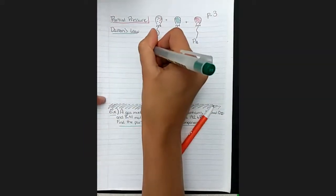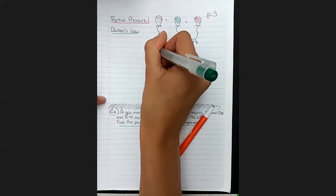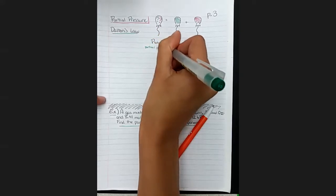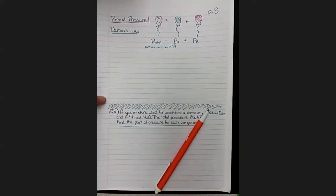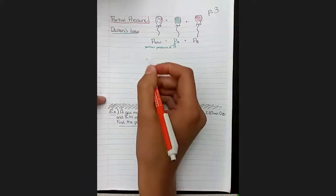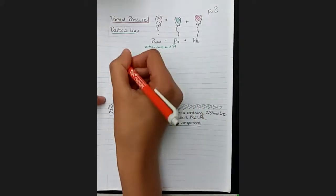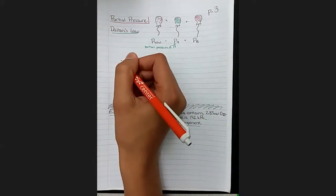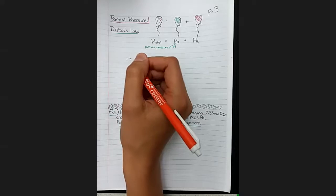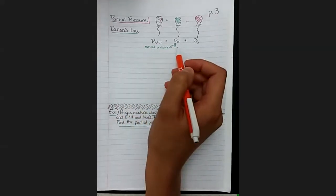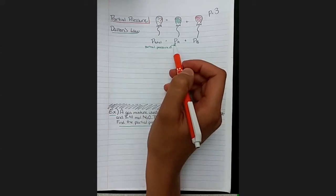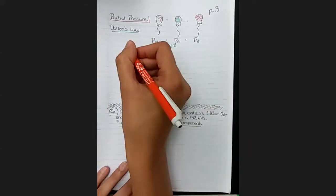So this is the partial pressure of A. We've been using the ideal gas law in the past, and what we can do is specify for each of the variables in the formula whether we're talking about the total mixture or an individual part of the mixture.